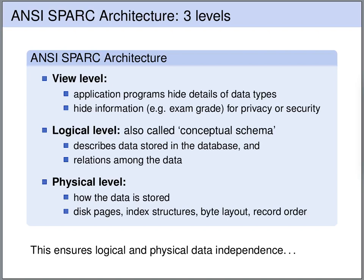At the physical level it's about how the data is stored — index structures for efficiently finding data, optimization of page byte layout or record order, in order to efficiently retrieve data from the storage medium. On top of the physical level we have the logical level, which provides a logical view on the physical level, hiding all implementation details. It's just about what data is stored and what the relations among this data are. In the relational model, the logical level can be thought of as a set of tables. On top of the logical level we have the view level, where we can create different views, hiding certain information for privacy or security, or aggregating information to help application programs.